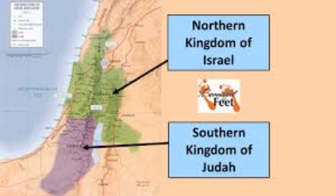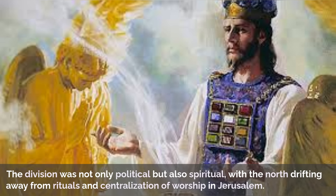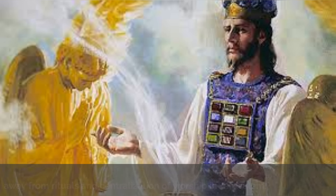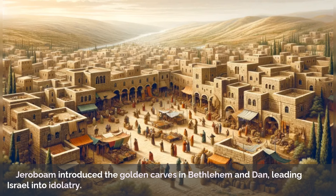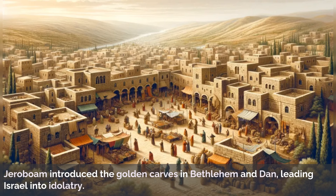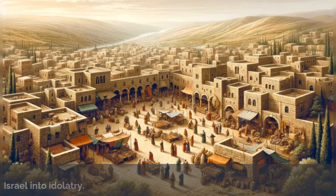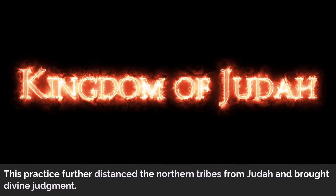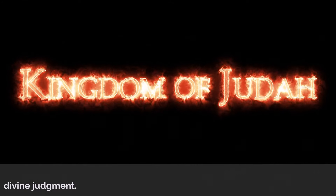Jerusalem remained the capital of Judah, while Jeroboam established his government in Shechem and later in Penuel. The division was not only political but also spiritual, with the north drifting away from the rituals and centralization of worship in Jerusalem. Jeroboam introduced the golden calves in Bethel and Dan, leading Israel into idolatry, which further distanced the northern tribes from Judah and brought divine judgment.